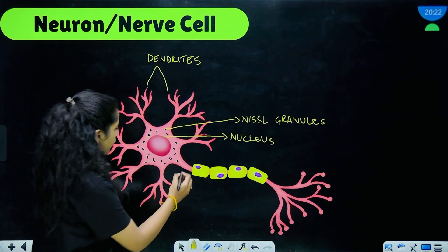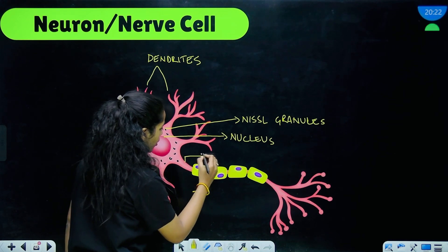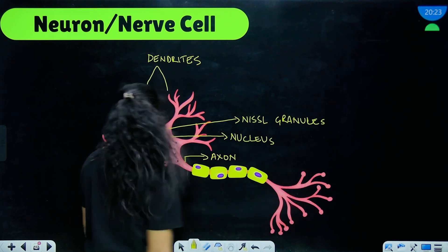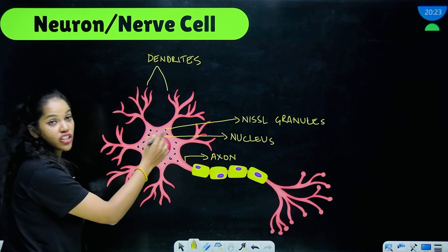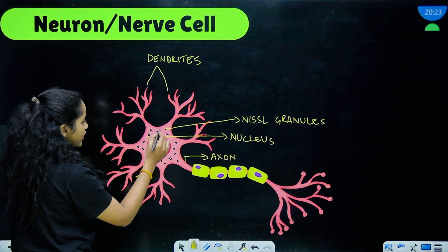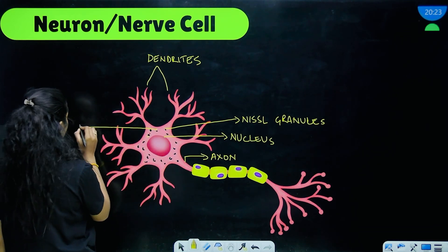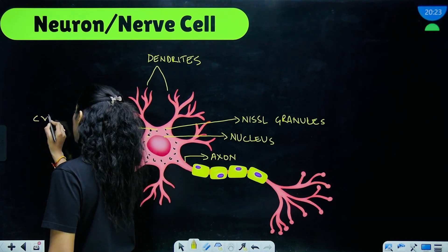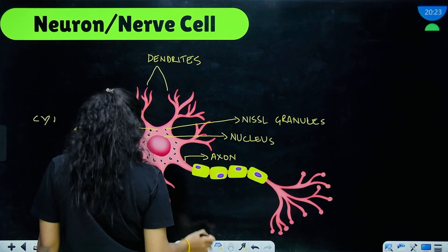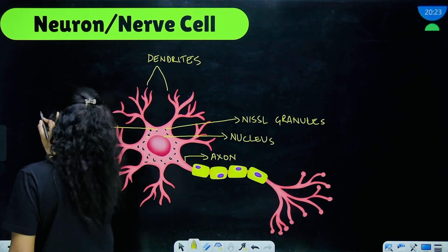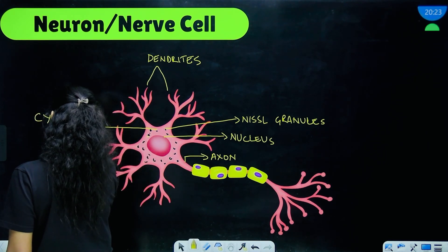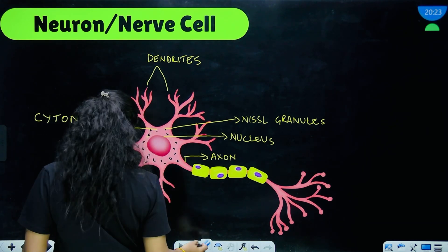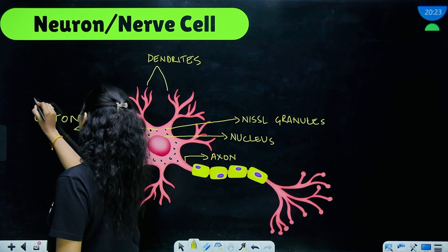Going on here you have the axon that extends to go on till there and this space that you see in which the Nissl granules are, this space over here is called the cyton. It is called the cyton, it is also called the perikaryon.